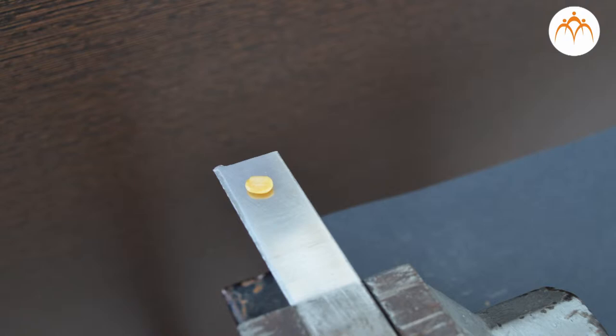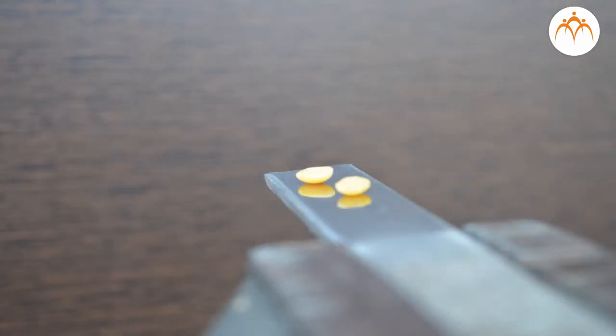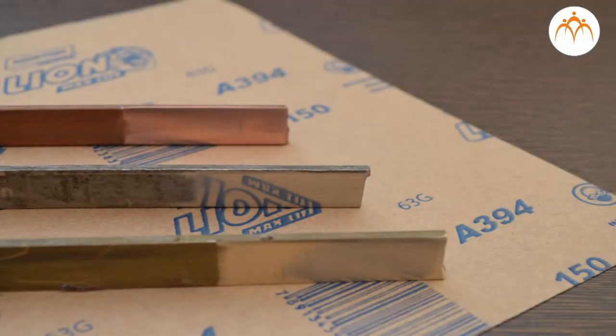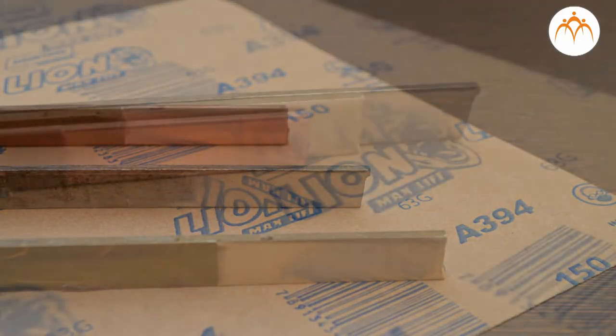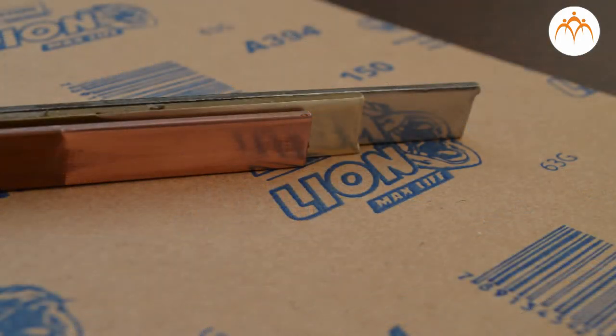After each step, the sandpaper removes the scratches from the previous step. We can create a reflecting surface with metal with this activity.